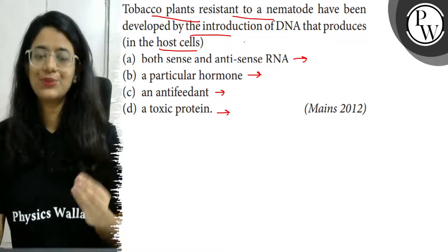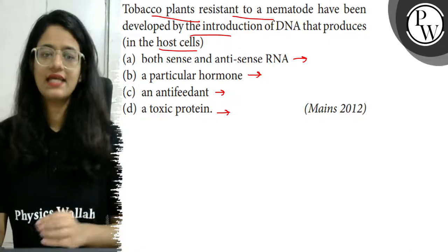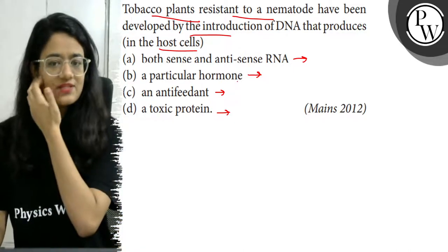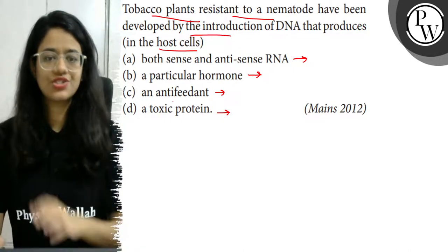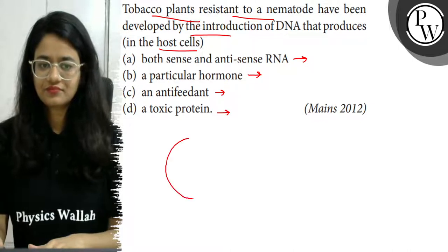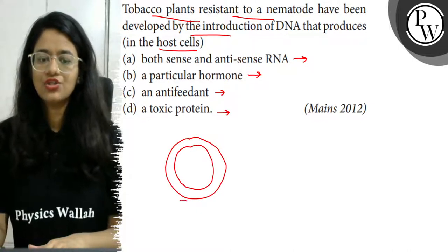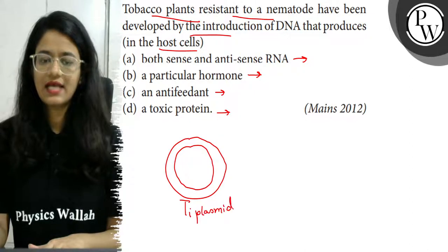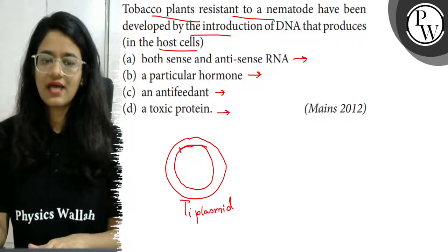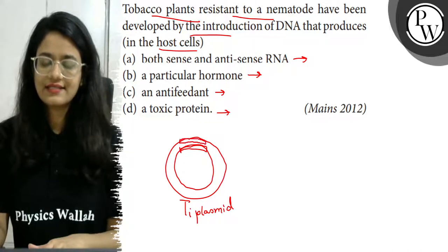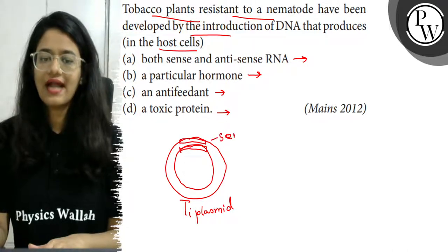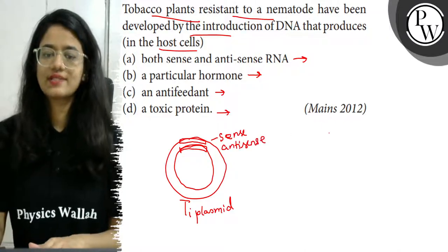What do they produce in the host cells? So let's try to understand. Basically, because we deal with plants, we take the Ti plasmid. Now what happens is that you have two strands — sense strand and anti-sense strand. What does this mean? Let's try to understand.